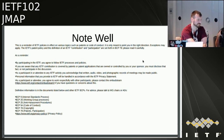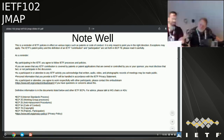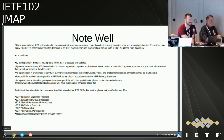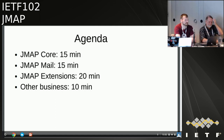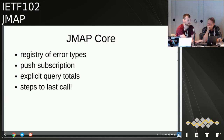Welcome everybody. Blue sheets are making their way around. We have a rough agenda: 15 minutes on JMAP core, 15 minutes on JMAP mail, 20 minutes to talk about extensions, and 10 minutes for any other business. This is obviously fairly rough and we'll see how we go. Let's get started with core.